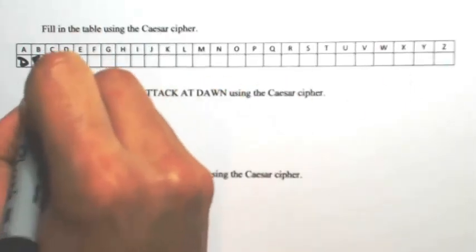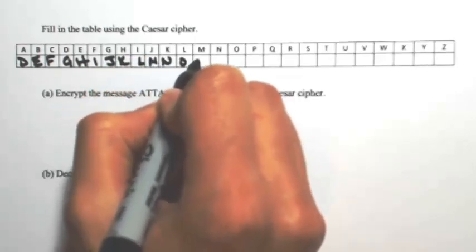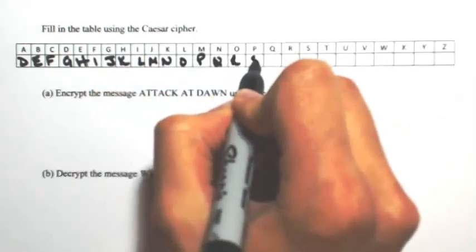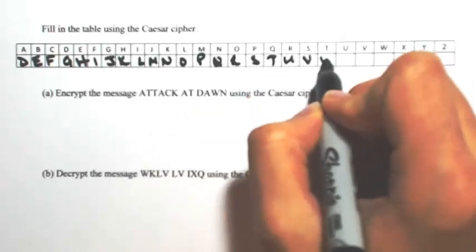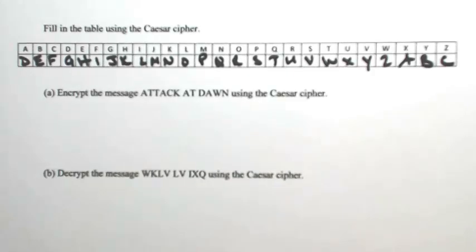I'm just going to shift everything to the right three, so D, E, F, G, H, I, J, K, L, M, N, O, P, Q, R, S, T, U, V, W, X, Y, Z, A, B, C. So everything is shifted to the right three.